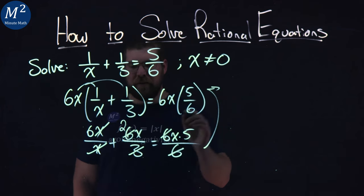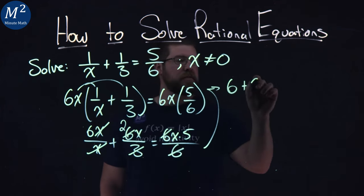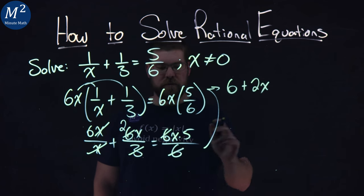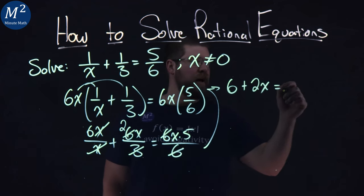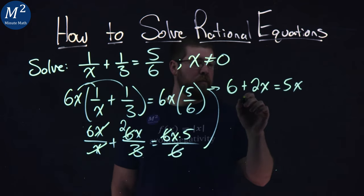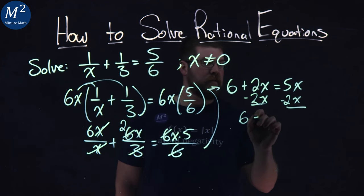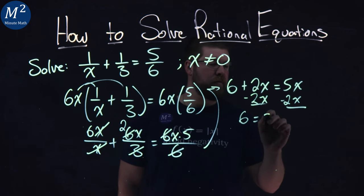So what's left over here? Well, we have 6 plus 2x equals x times 5, or 5x. From there, just solve it like normal. Subtract 2x to both sides. And we have 6 equals 5x minus 2x is 3x.